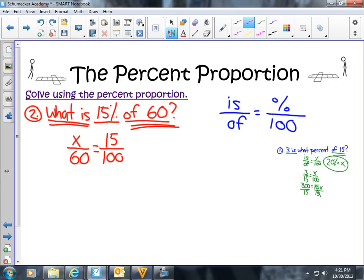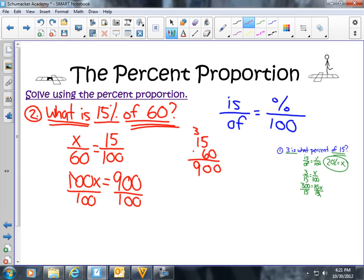Now we're going to cross multiply. 100 times x is 100x. Then we're going to do 60 times 15. We're going to write down 15 times 60. I'm going to bring my 0 down and get my 30, and 6 times 1 is 6 plus 3 is 9, so this is 900. I'm going to say this equals 900. Now I have to divide, so I'm going to divide 100x by 100 and 900 by 100. And I end up getting x equals, these cross out, I end up getting 9.